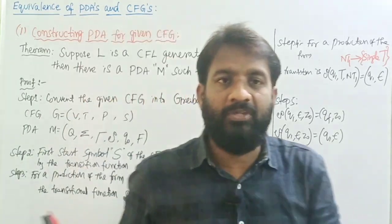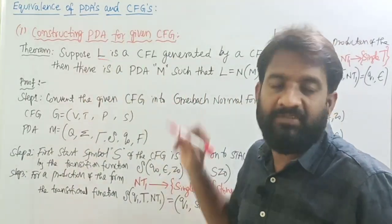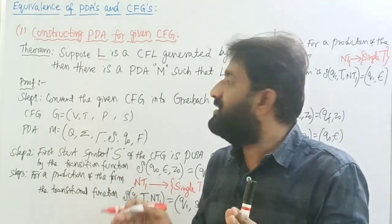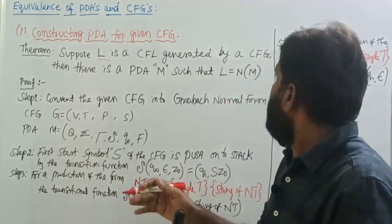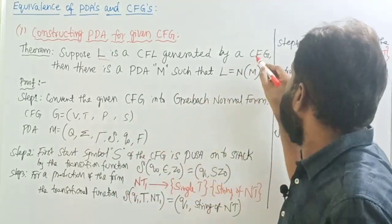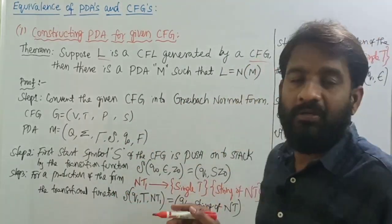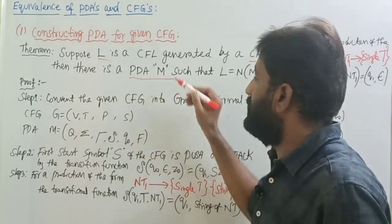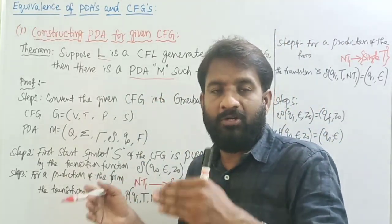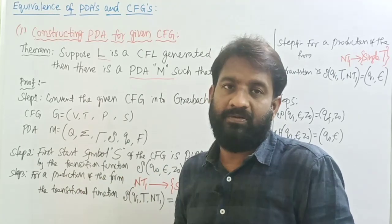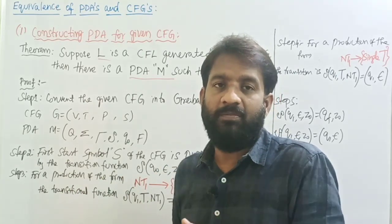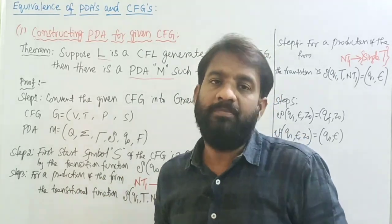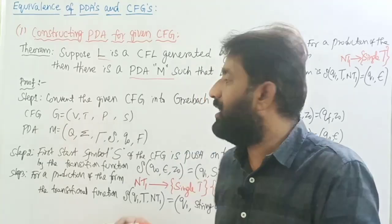There I have written a theorem. Suppose L is a context-free language. A context-free language is generated by some context-free grammar and is going to be accepted by some pushdown automaton. So we are going to take a given context-free grammar and for that grammar we have to develop the corresponding pushdown automaton. That is our topic.